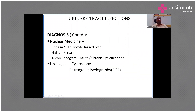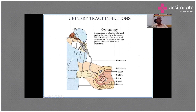Cystoscopy and retrograde pyelography are also done to evaluate the whole urinary tract. It is not as simple as treating a UTI and forgetting about it — once a UTI is suspected, you need to evaluate further to understand why it occurred. This helps you decide how aggressive to be, how to follow the patient, and how to correct the underlying problem to prevent recurrent UTIs, which can lead to renal dysfunction and further complications.